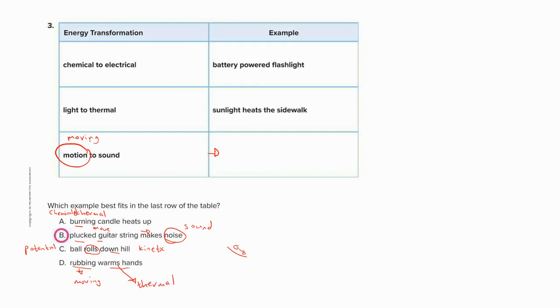So only two options involve moving, B and D. But we must also look for the end being sound. Here we have thermal, sound, kinetic, thermal. The only option that gives us sound is B. And that is why we chose this as the answer.